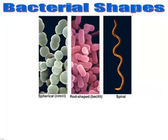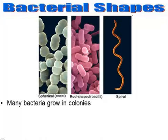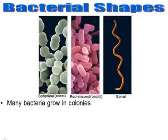Looking at bacteria shapes, there are spherical, rod-shaped, and spiral-shaped bacteria. Many bacteria grow in colonies — the spherical-shaped ones are grouped together, and the rod-shaped ones are congregated together. The only ones living by themselves in these pictures are the spiral-shaped. So some bacteria grow in colonies while others live a solitary life.